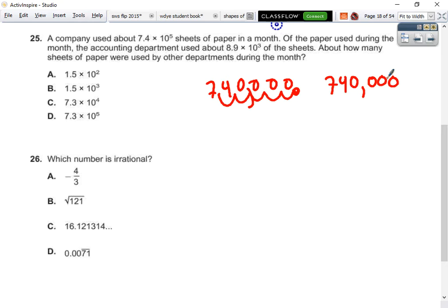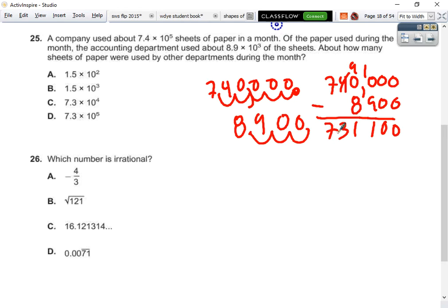This department had 1, 2, 3, and we had 8, 9, 0, 0. So we subtract 0, 0, 9, 1, 1, 1, 3, 7. So 1, 2, 3, 4, 5. 7.3 times 10 to the 5th is clearly the answer. Thank you.